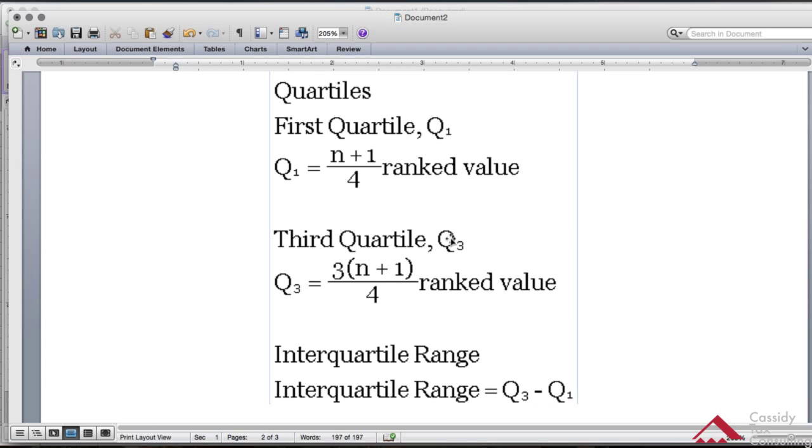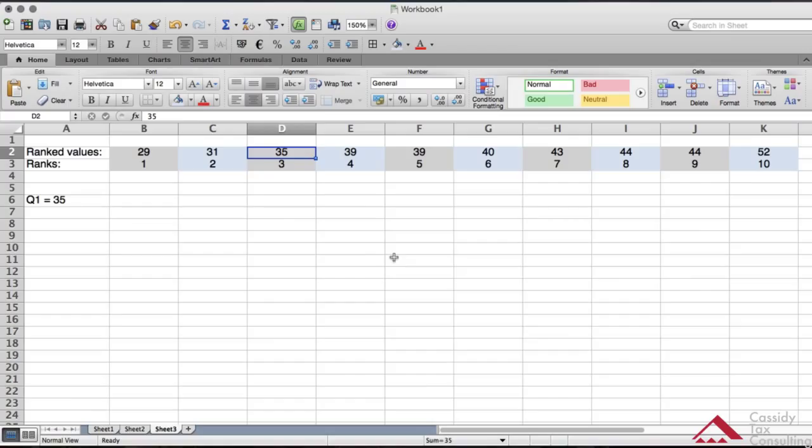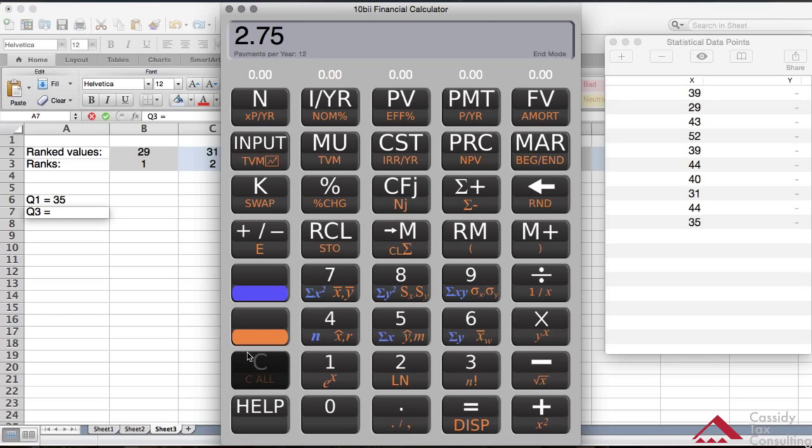To get the third quartile, it's the same formula as Q1. The only difference is you put the 3 before the n plus 1. So whatever n+1 is, you multiply it by 3 to get to the third quartile. That's the difference. So let's solve for that. Let's bring up the calculator.